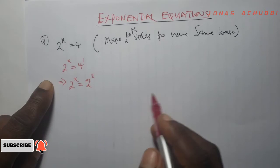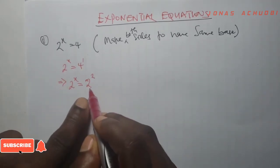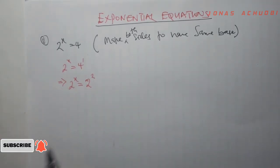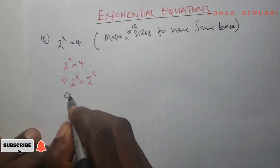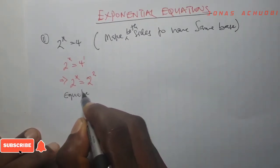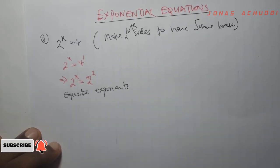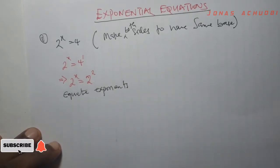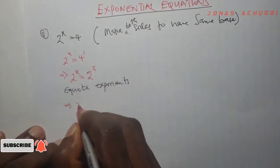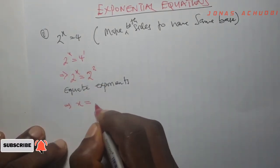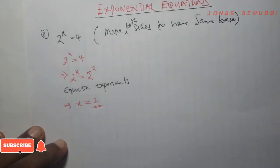So that 2 times 1 is still 2. Now the base on the left hand side is 2 and the base on the right hand side is 2. So once the bases are the same, I will now equate the powers — equate exponents or powers or index. The exponent on the left hand side is x, on the right hand side is 2. And that is my answer: x equal to 2.